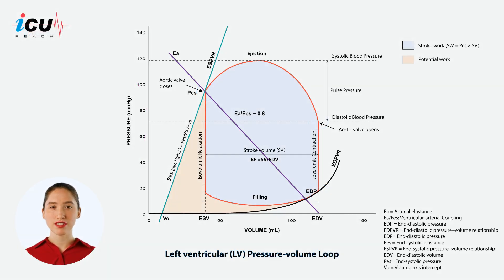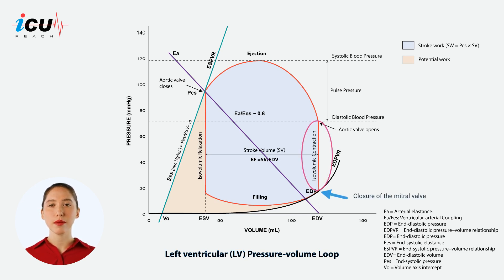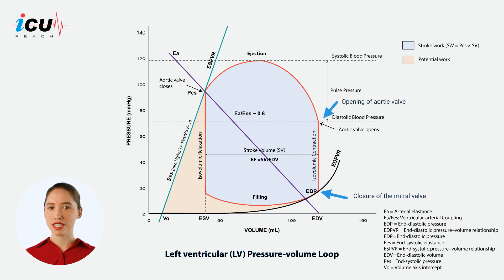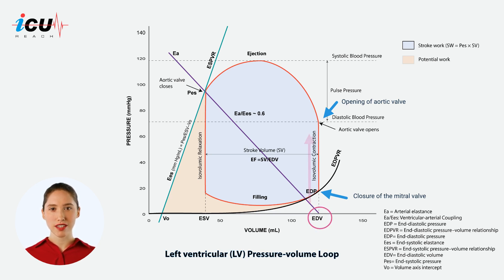The first phase, isovolumetric contraction, begins with the closure of the mitral valve and ends with the opening of the aortic valve. During this phase, the volume within the left ventricle remains constant as the ventricle contracts, leading to a rapid increase in pressure.